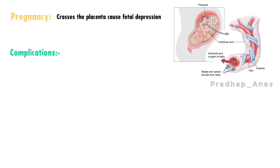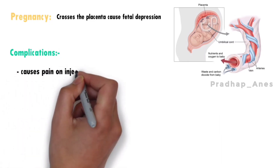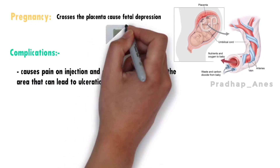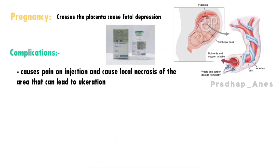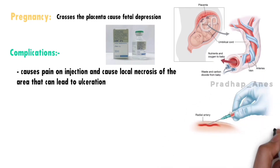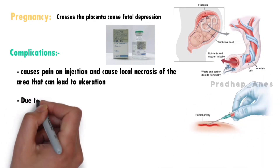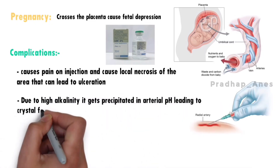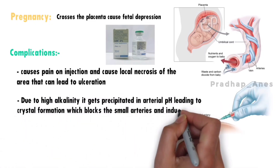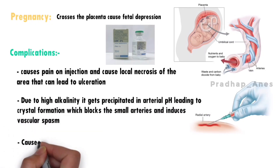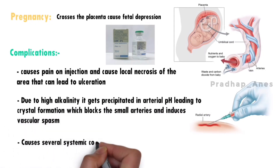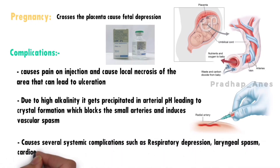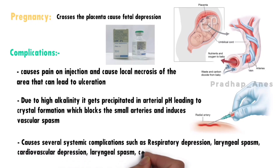Complications: It causes pain on injection and can cause local necrosis of the area, leading to ulceration. This pain can be reduced by mixing lignocaine with thiopentone sodium. Intra-arterial injection: Due to high alkalinity, it precipitates in arterial pH, leading to crystal formation which blocks small arteries and induces vascular spasm. It also causes several systemic complications such as respiratory depression, laryngeal spasm, cardiovascular depression, coughing, hiccups, and tachyphylaxis.